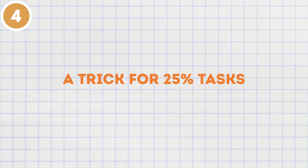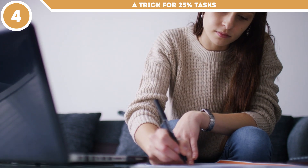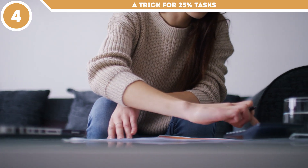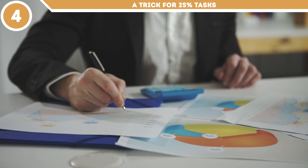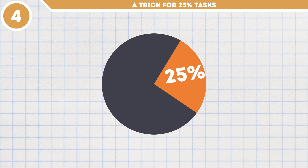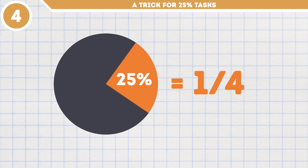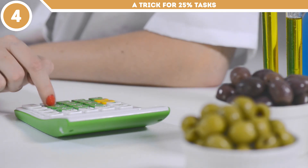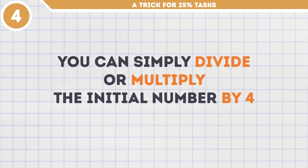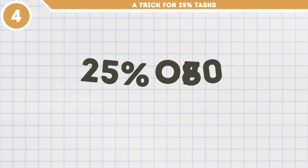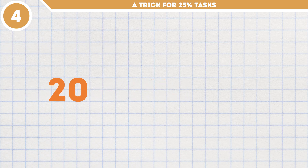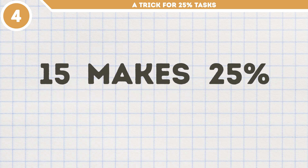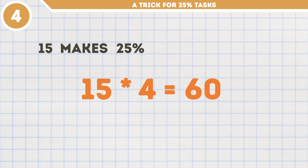Method number 4: A trick for 25% tasks. Now that we're done with the most common methods, it's time to learn some awesome shortcuts. This trick is extremely useful for tasks involving 25% of something. 25% is a quarter, or one-fourth of 100%, right? So whenever you need to find 25% of something, or you already know 25% of a whole, you can simply divide or multiply the initial number by 4. For example, to calculate 25% of 80, just divide by 4 and you get 20. Or if you know that 15 makes 25% of something, multiply 15 by 4 to get 60.